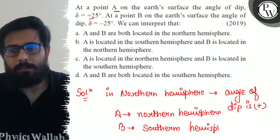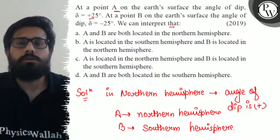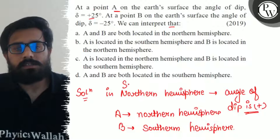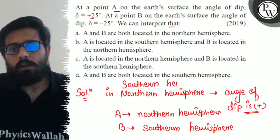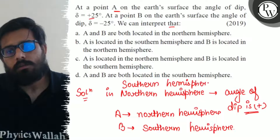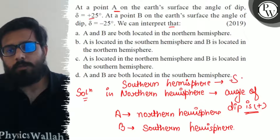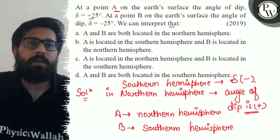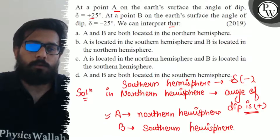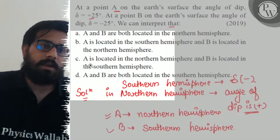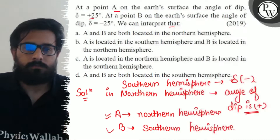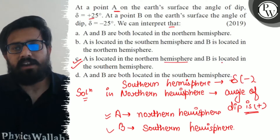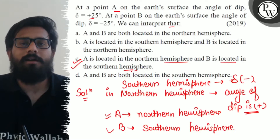We know the angle of dip is the angle made by the magnetic field with the horizontal. Northern Hemisphere is always positive, and the angle of dip is always negative in the Southern Hemisphere. So option C is absolutely correct — A is located in the Northern Hemisphere and B is located in the Southern Hemisphere. I hope you got the concept of this question.